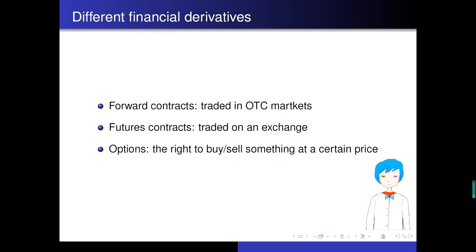We mainly introduced three types of financial derivatives in our class. The first is forward contracts. The second is futures contracts. And the last one is options.